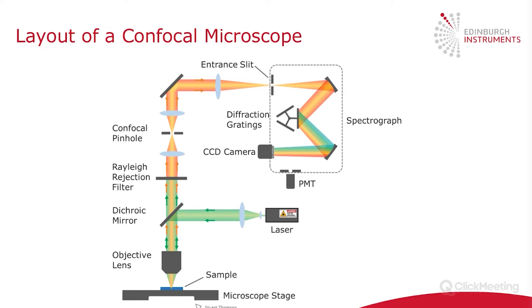The sample is placed on a microscope stage, and this stage is nearly always motorized, which allows you to move the point where the laser hits on the surface of the sample. These microscope stages can be moved in the XY and Z direction, where Z is up in the vertical axis.